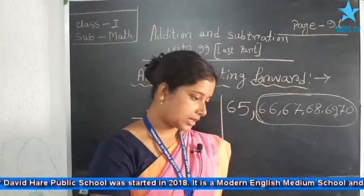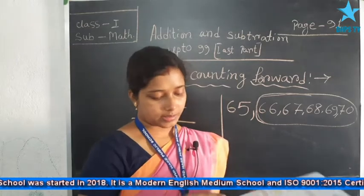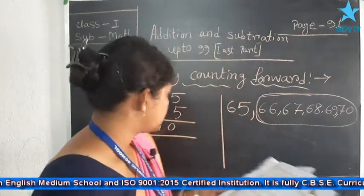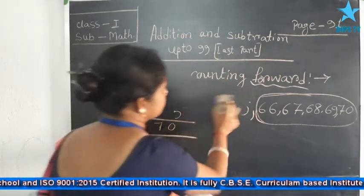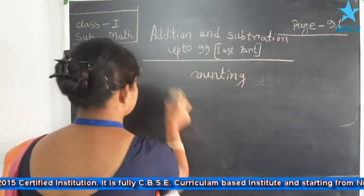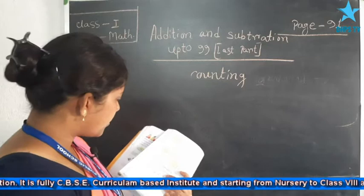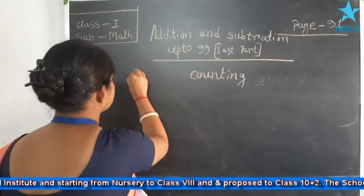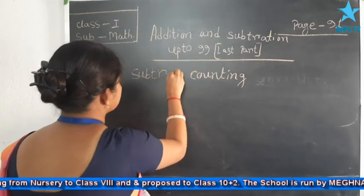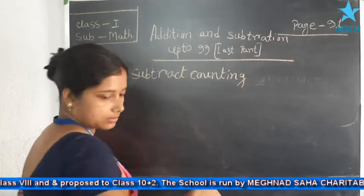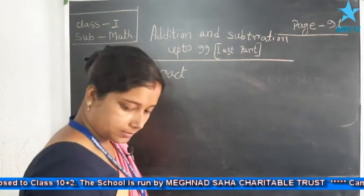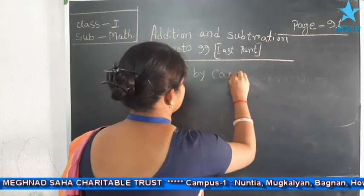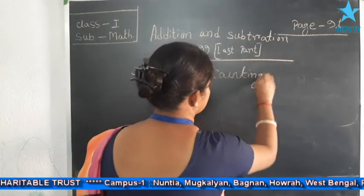Next, turn the page and open page number 95. Here the topic is: subtraction by counting backward.